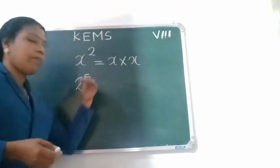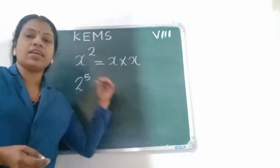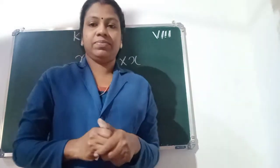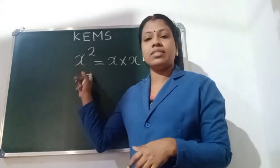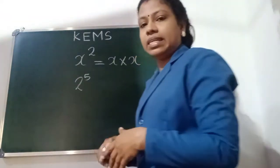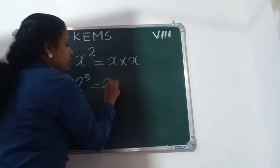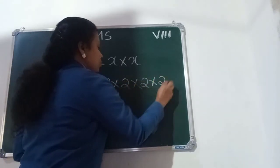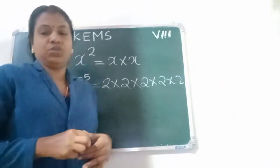Like 2 power 5 — it is read as 2 raised to the power 5. It can be written as 5 times 2, that is, 2 into 2 into 2 into 2 into 2.